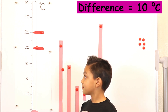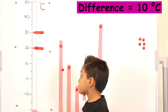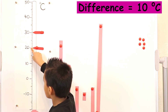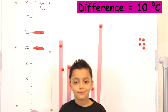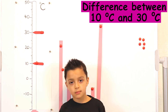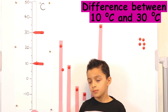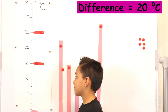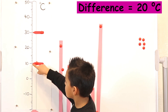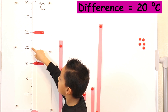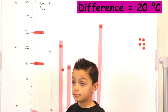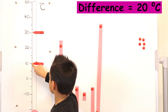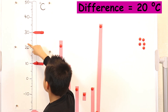Or we can use the thermometer to count the difference. Can you point at twenty and count in fives? Five, ten. Now what's the difference between the two temperatures there? Twenty. Can you show us by counting on the board? Five, ten, fifteen, twenty. So you counted it in fives. Can you count the difference in tens now? Ten, twenty. That's how we count the difference.